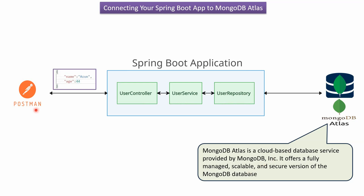Here you can see Postman. Using the Postman client, we can send user details to the Spring Boot application. The Spring Boot application will convert the user JSON to a user object and pass it to the user controller. The user controller passes the user object to the user service, then the user service passes it to the user repository, and the user repository will save the user object as a document in the MongoDB database.